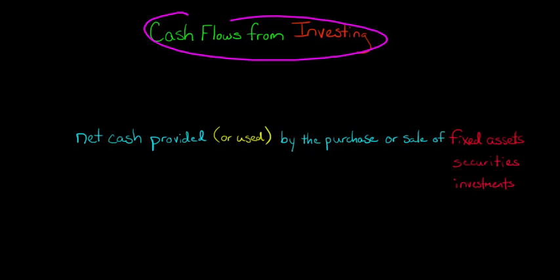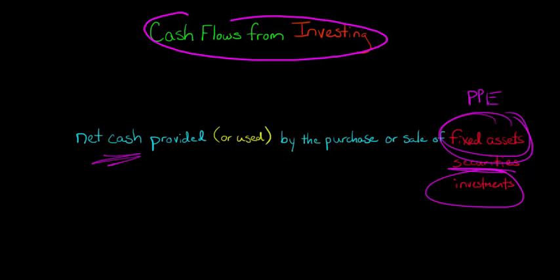Cash flows from investing is the net cash provided or used by the purchase or sale of fixed assets like equipment, machinery, or PP&E. It could also be securities, available for sale securities, or long-term investments. The net cash provided by the sale of investments or fixed assets, or used in buying them, goes in this cash flows from investing category.